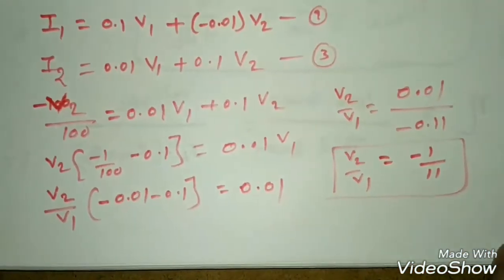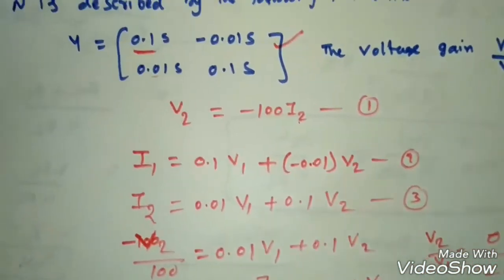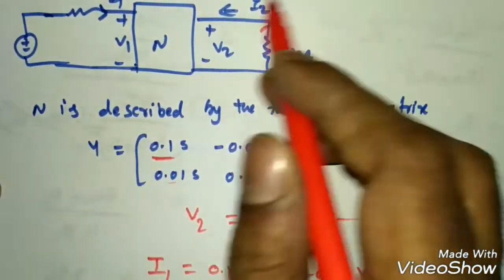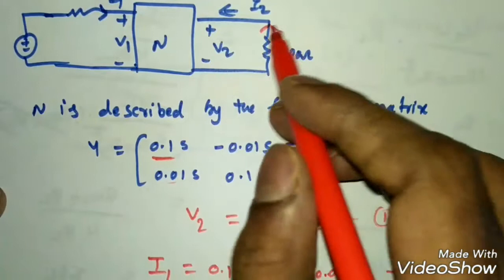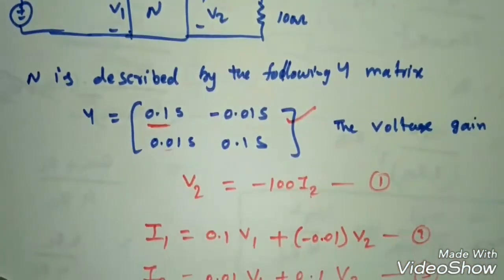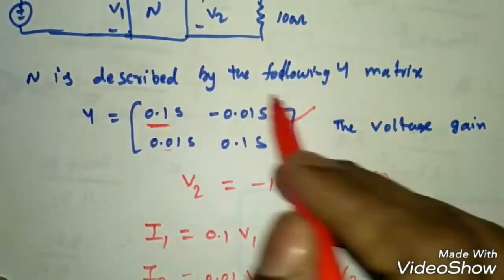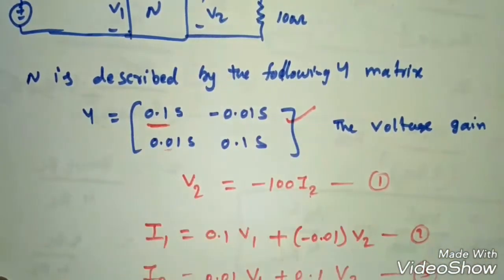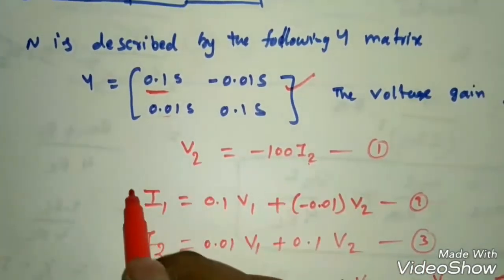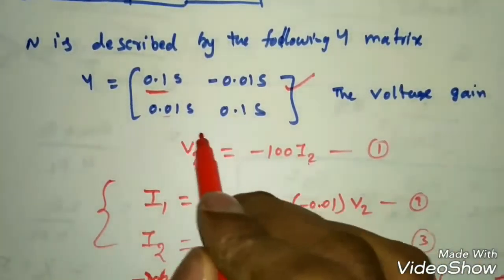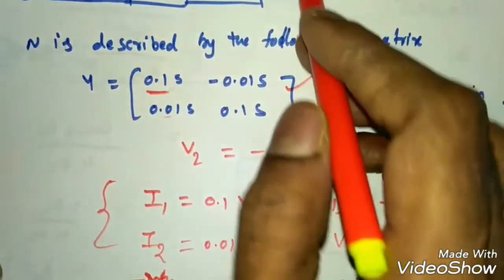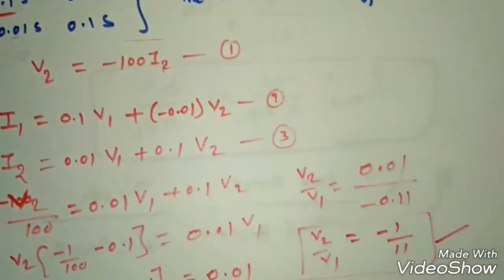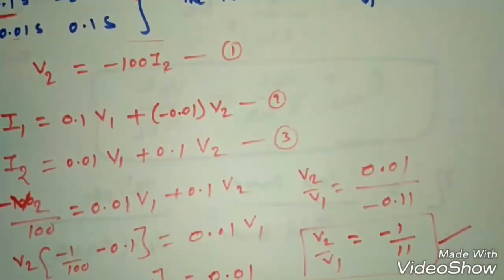For this type of question: wherever an output impedance or voltage gain is needed, use the given matrix (Z, Y, or T), write the two port equations, add the external circuit relationship, then solve. The gain here is −1/11. This is a GATE 2001 question — find Z11 and Z21 for the two-port network shown.